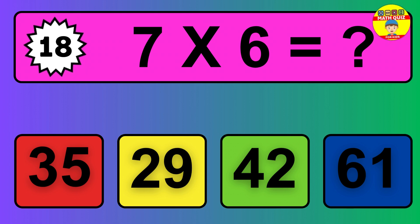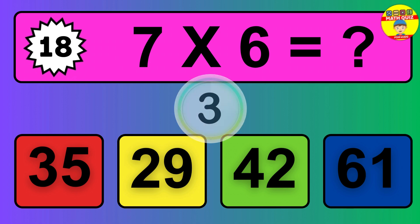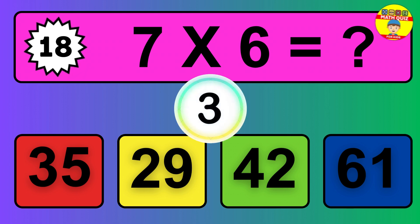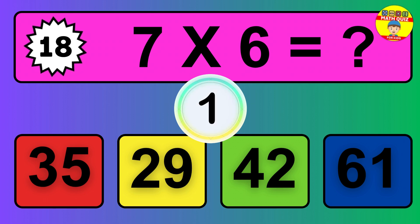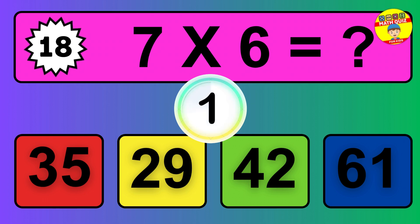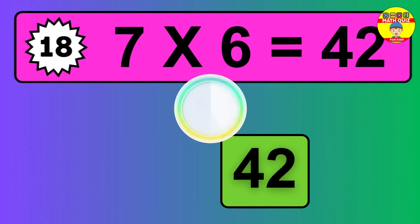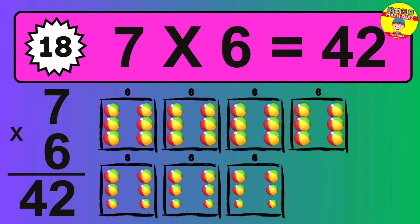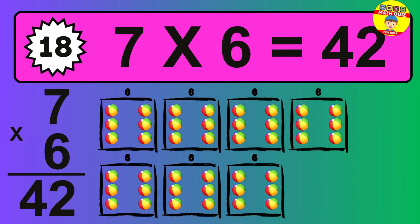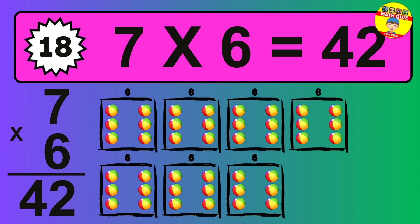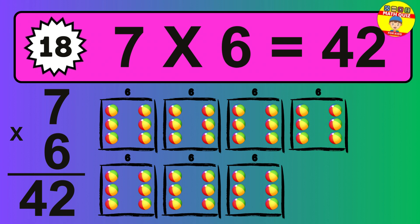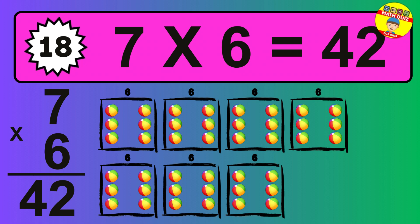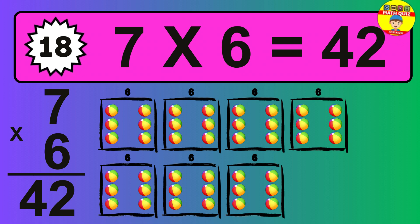Question 18. Seven times six equals what? The answer is 7 times 6 is 42. To calculate, we have 7 groups with 6 balls each one. So how many balls do we have? 42 balls.